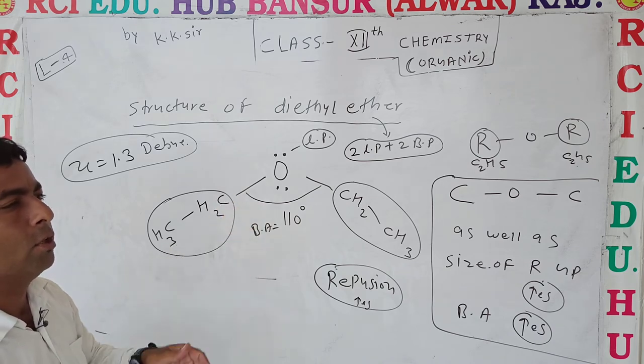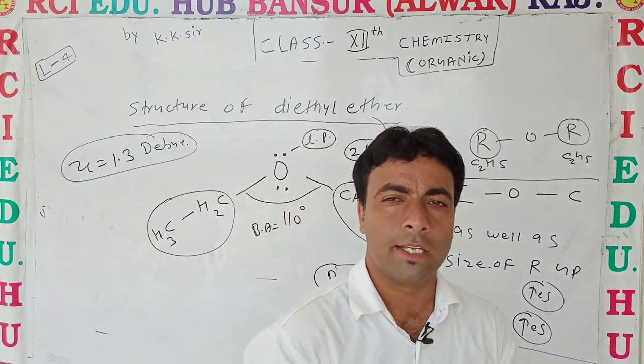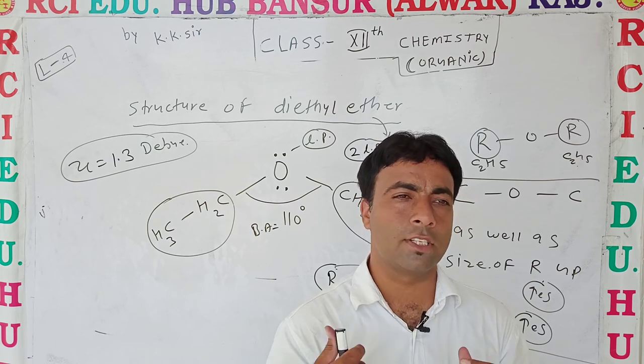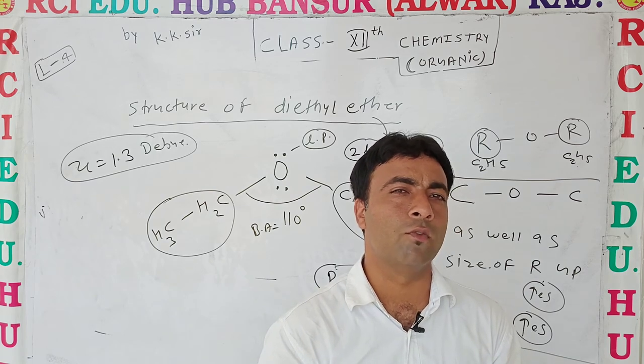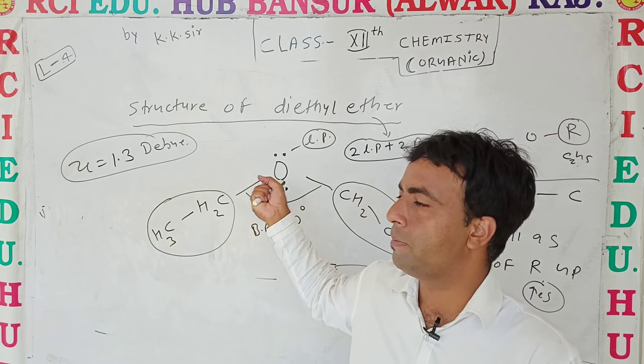A question may be asked: ether and alcohols, which has more boiling point and why? Alcohols have more boiling point because they have hydrogen bonding, but in ether there is absence of hydrogen bonding.